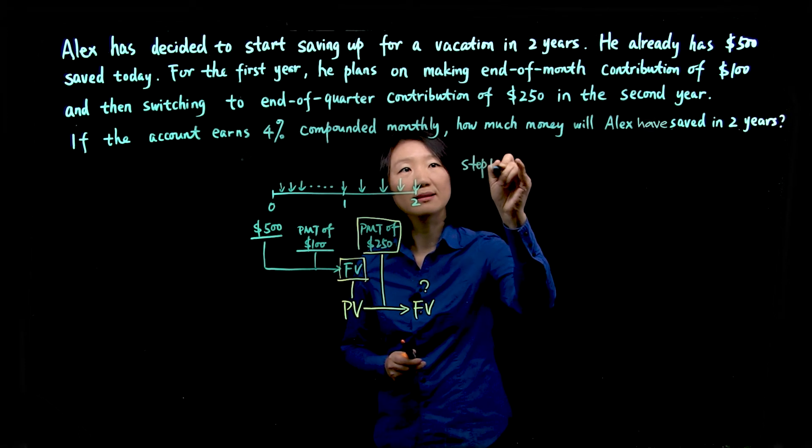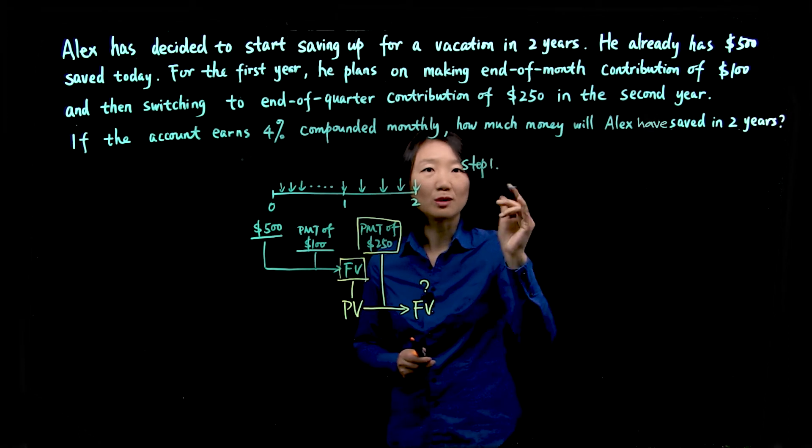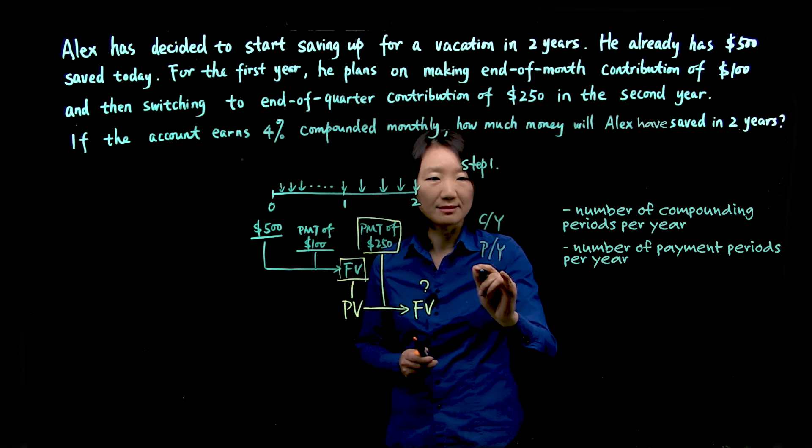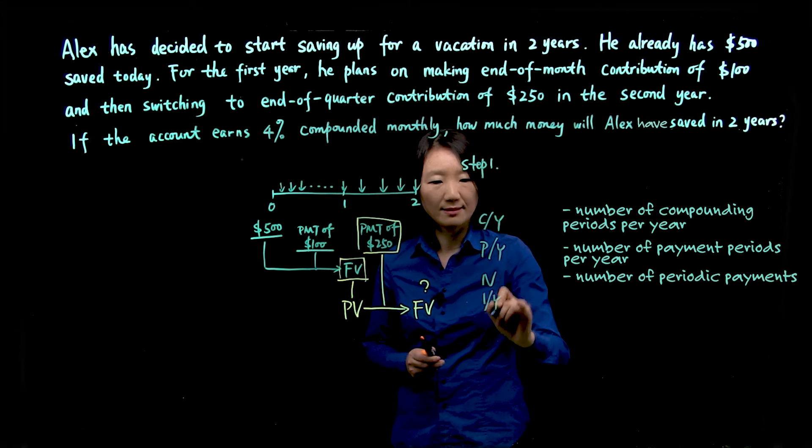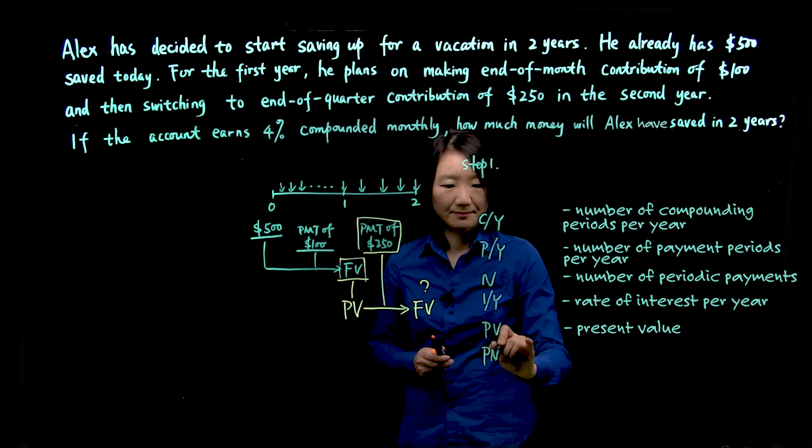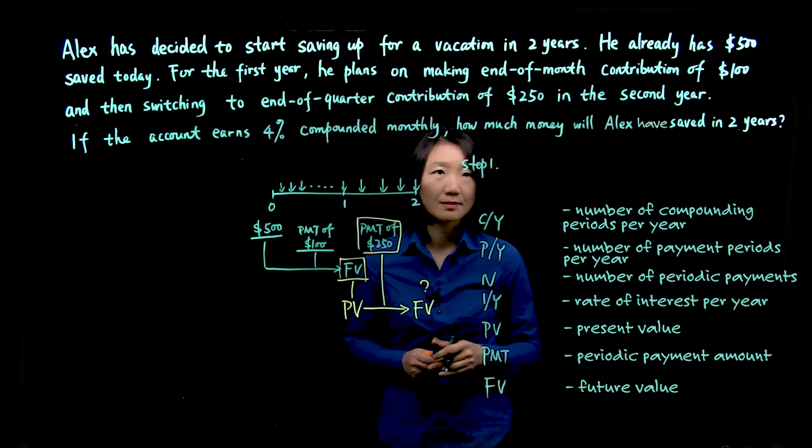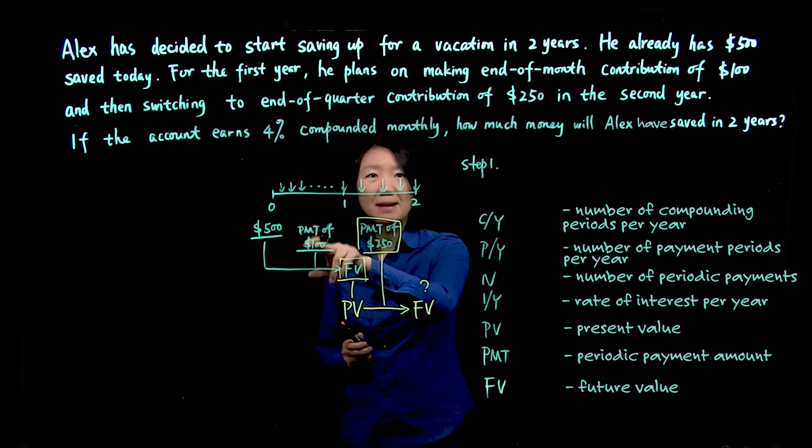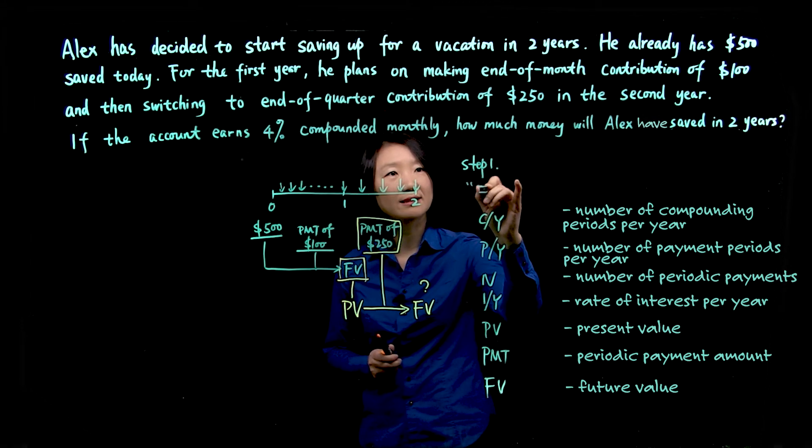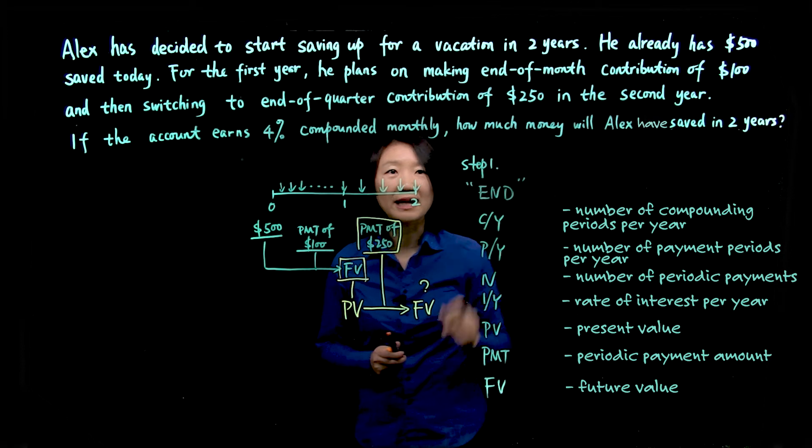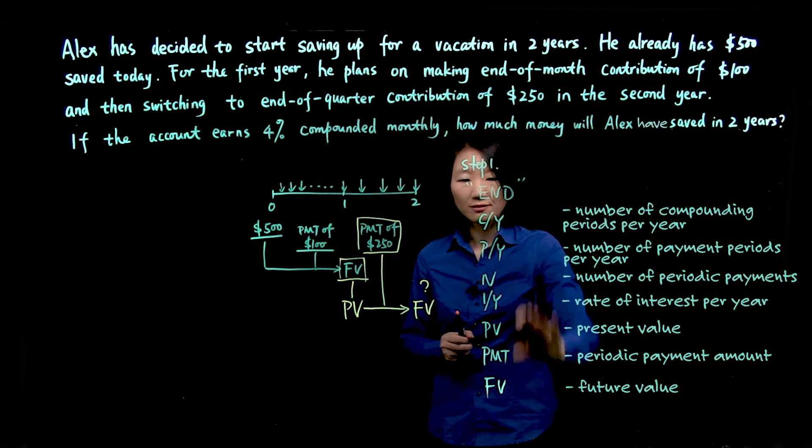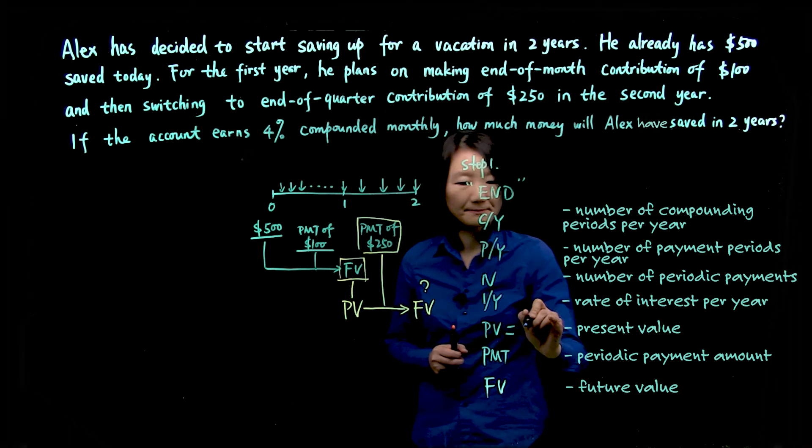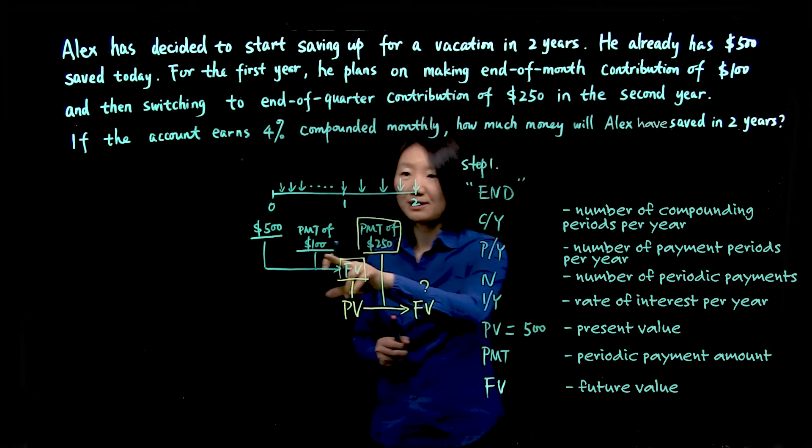Step one, we're looking at the first year. So in order to use financial calculator, we have to identify the following seven variables. And also because we're looking at the annuity problem, we know all the periodic payments happen at the end of the month. So let's write it here. Our setting will be end. So for all the variables, we already know PV is $500, and the periodic payment is $100.